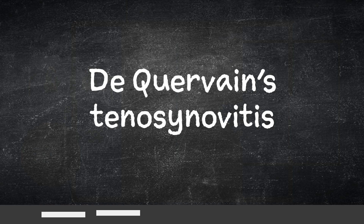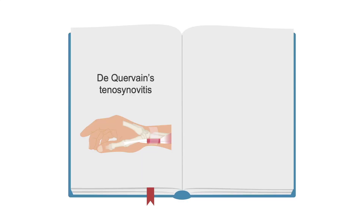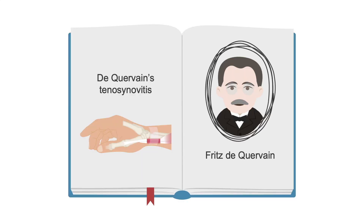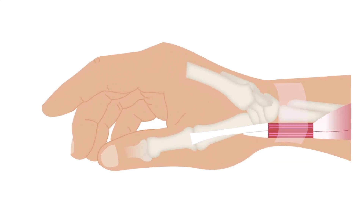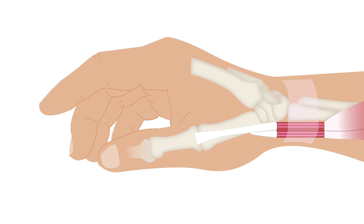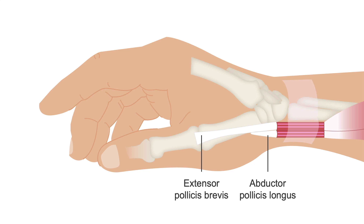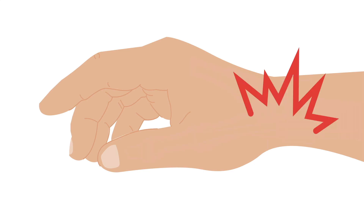Now let's move on to De Quervain's tenosynovitis. This is a common disorder named for the Swiss surgeon Fritz de Quervain, who first described it in 1895. It affects the two tendons that control the movement of the thumb — the extensor pollicis brevis and the abductor pollicis longus — causing pain over the radial aspect of the wrist with radiation to the forearm.